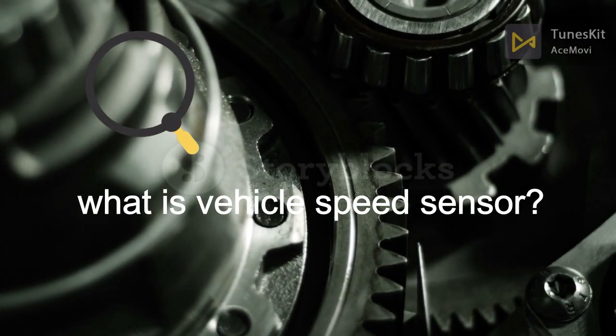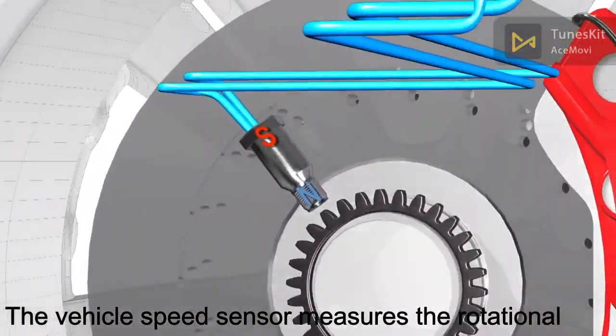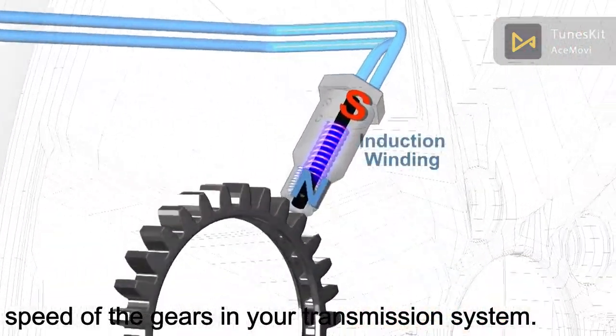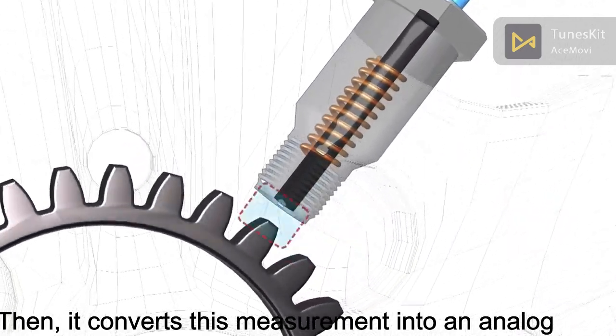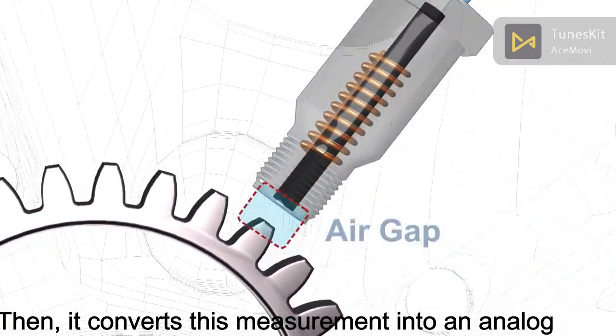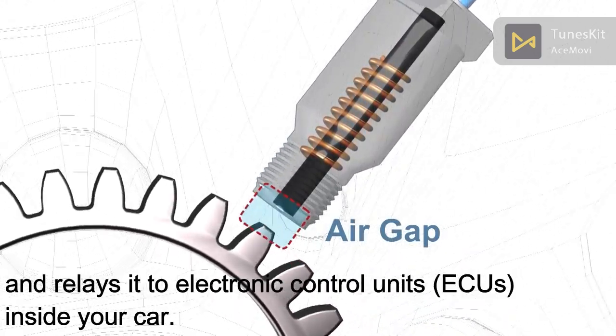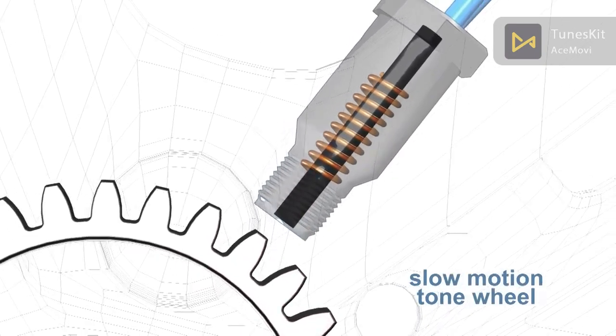What is a vehicle speed sensor? The vehicle speed sensor measures the rotation speed of the gear in your transmission system. Then it converts this measurement into an analog signal or a low voltage square wave signal and releases it to the electronic control unit inside your car.